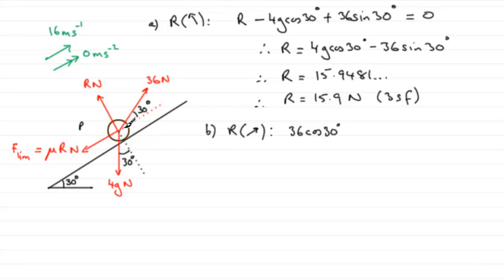Don't have to worry about R because it's perpendicular to the direction we're resolving. Mu R acts in the opposite direction to the way we're going, so that's minus mu times R. Then we've got the weight here, 4g Newtons.